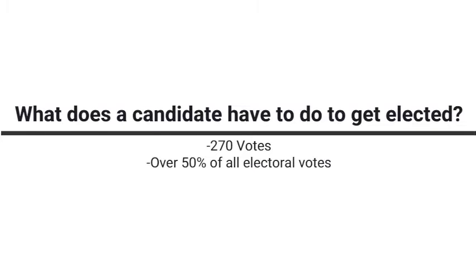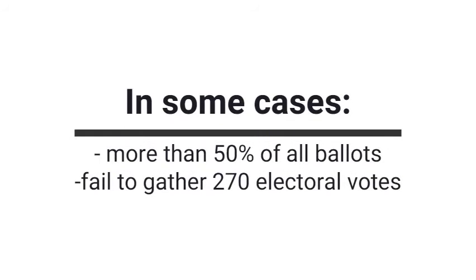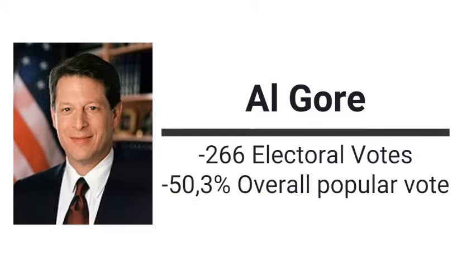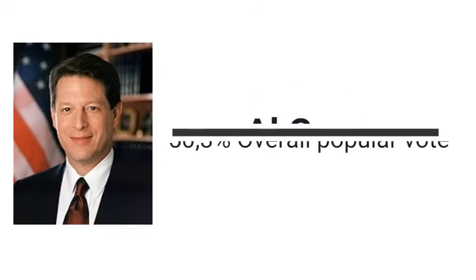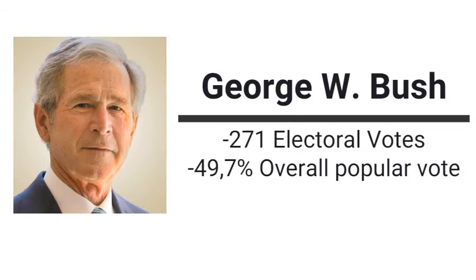Now let's talk about what a candidate has to do to get elected. He has to gather over 270 votes — that's over 50% of all electoral votes. In some cases, candidates gather 50% of all ballots but fail to gather 270 electoral votes. As an example, we take the battle between George Bush and Al Gore in the year 2000, where Al Gore was the favorite with 50.3% of all overall popular votes, but only 266 electoral votes. On the other hand, George Bush had 271 electoral votes but just 49.7% of all popular votes.